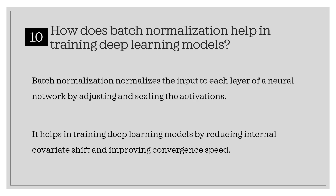How does batch normalization help in training deep learning models? Batch normalization normalizes the input to each layer of a neural network by adjusting and scaling the activations. It helps in training deep learning models by reducing internal covariate shift and improving convergence speed.